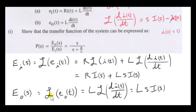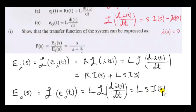Next we get the Laplace transform of little e sub O of t — that's the output voltage. We take out L, which is a constant, and get the Laplace transform of the derivative, which we've already seen as S times big I of S.